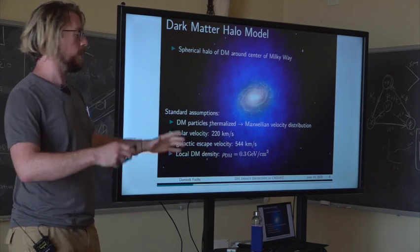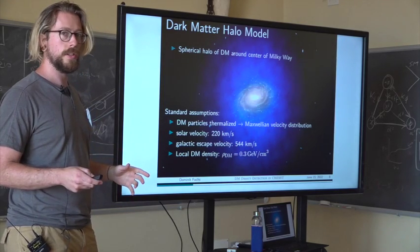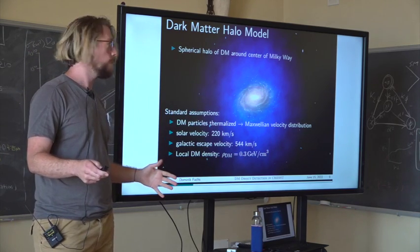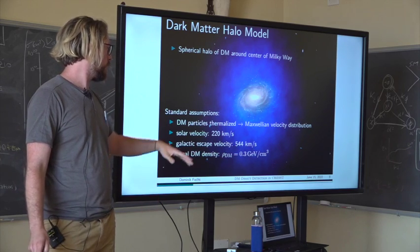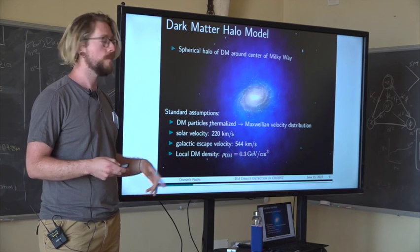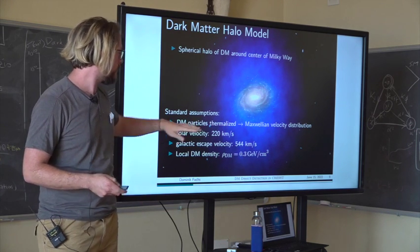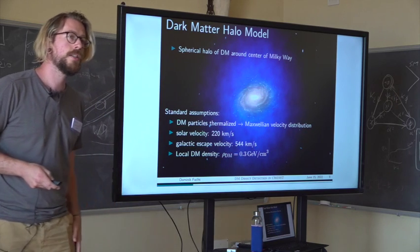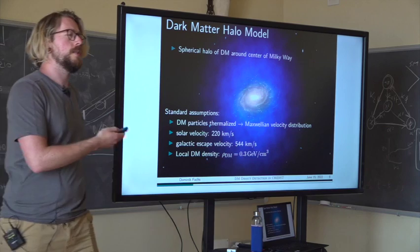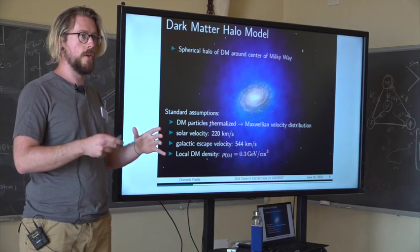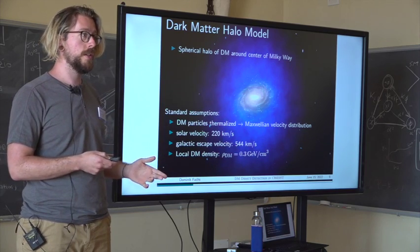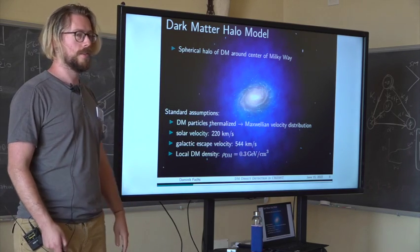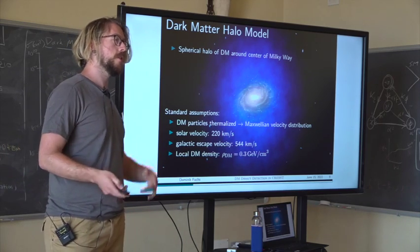One basic ingredient for direct detection experiments is to assume we live in a dark matter halo — a spherical halo around the center of the Milky Way — where dark matter particles move in a Maxwell-Boltzmann velocity distribution with standard values for solar velocity, escape velocity, and so on. The local dark matter density used is a bit outdated. Many experiments still use this number to remain comparable with each other, but my personal opinion is it should be updated through a community-wide effort so that everyone uses the same number.